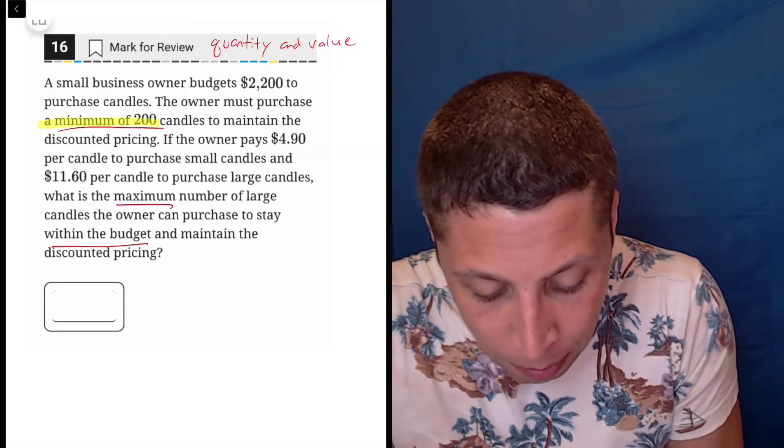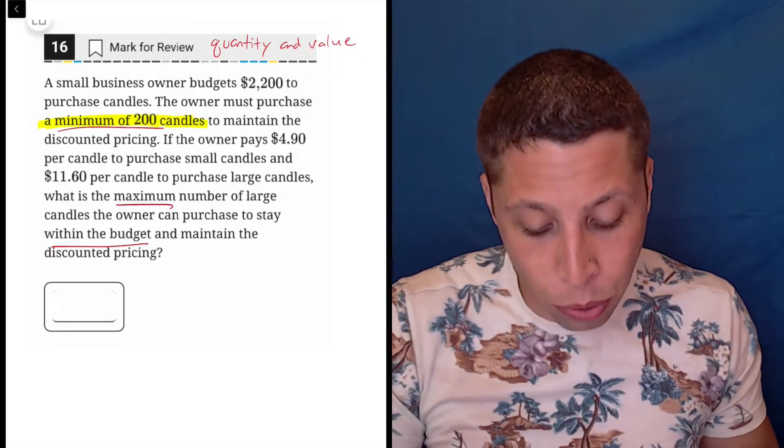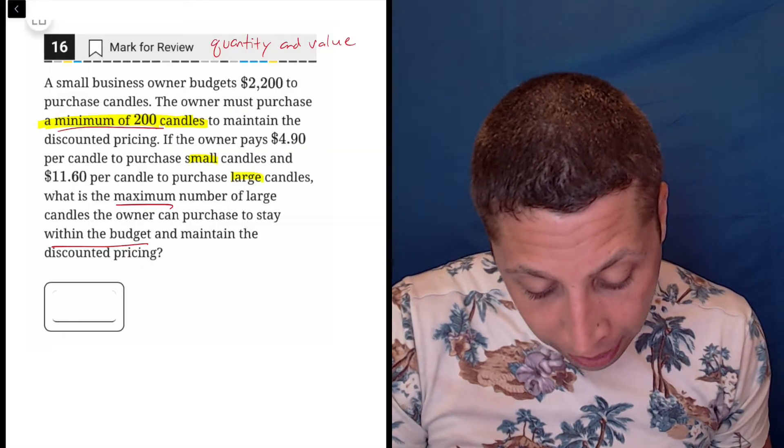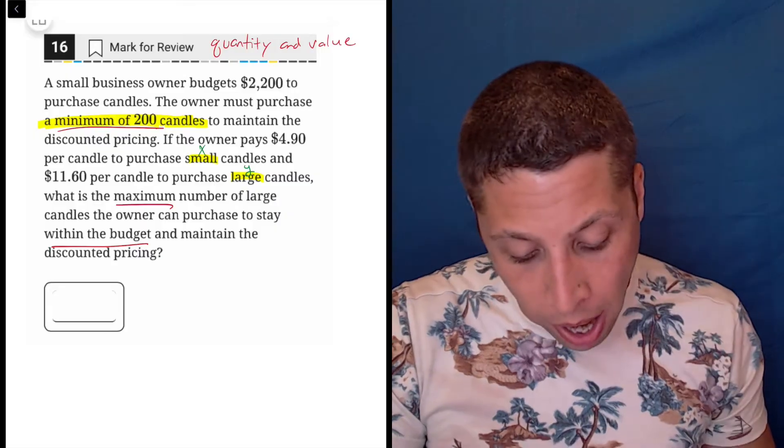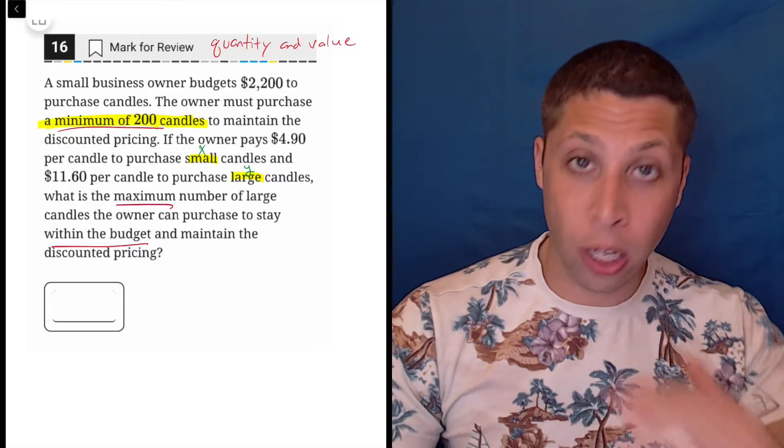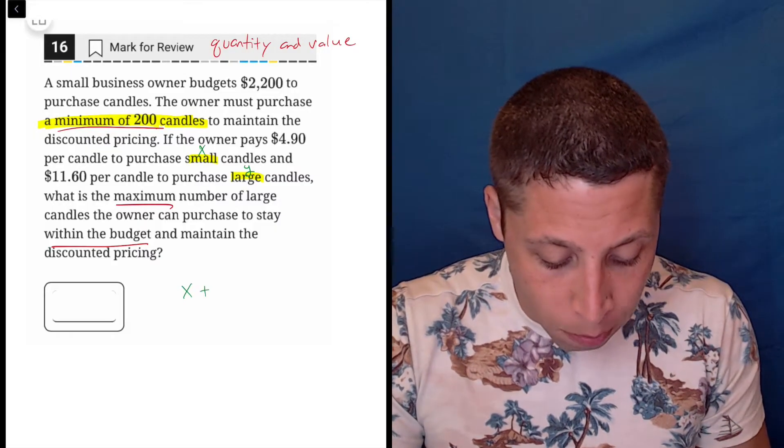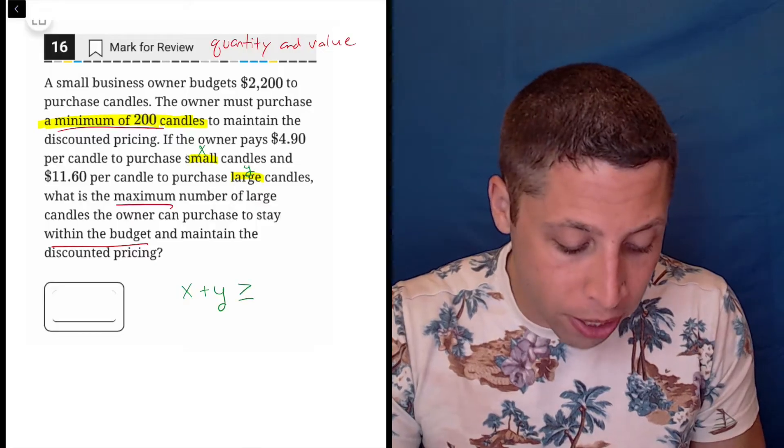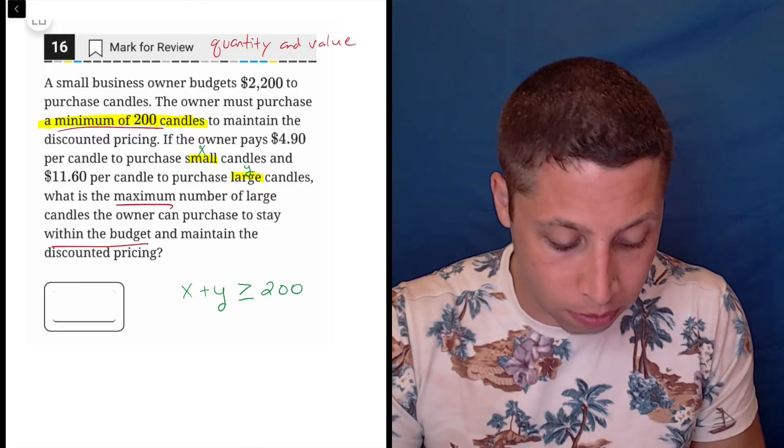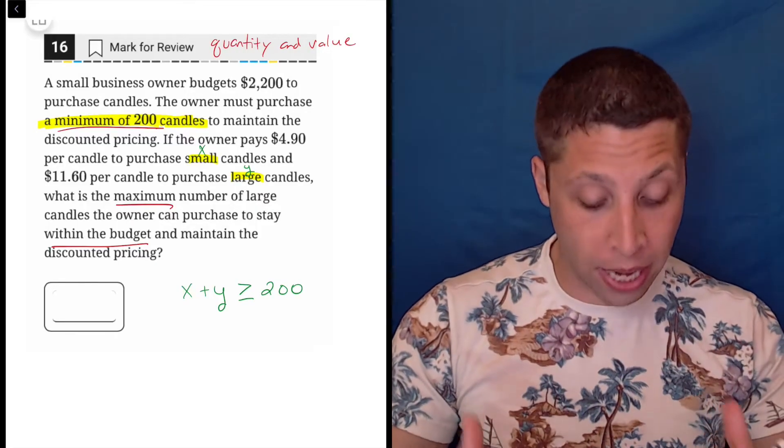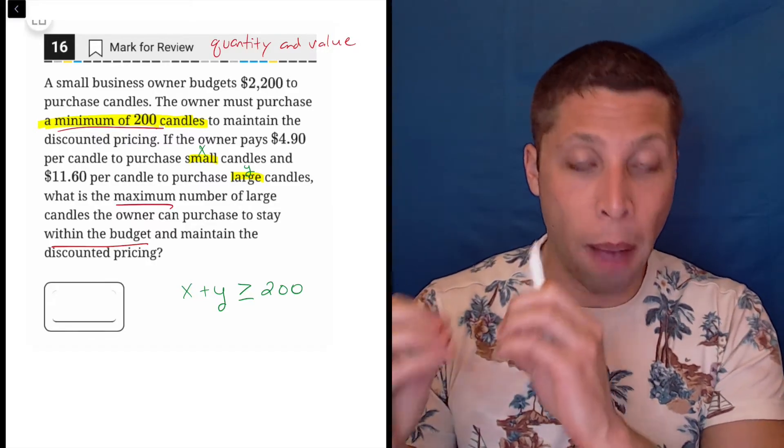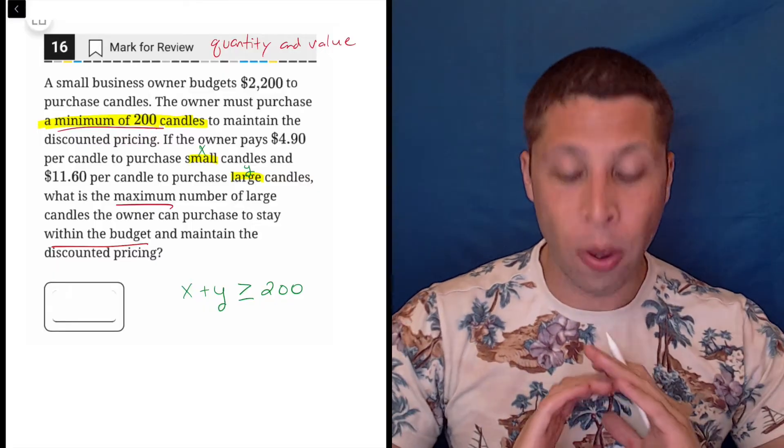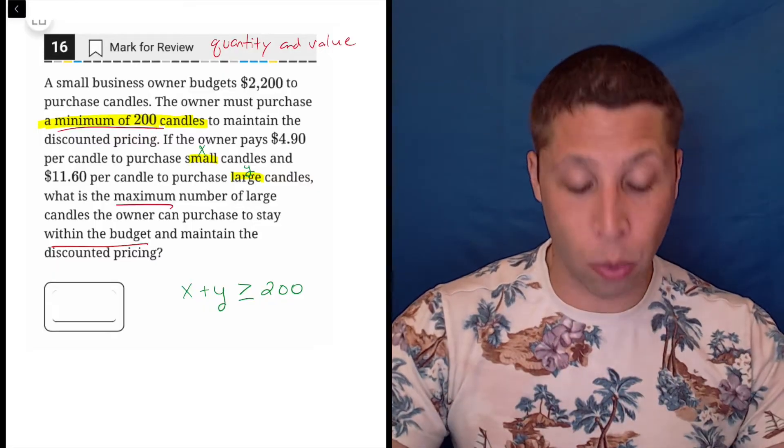So we can create a two variable inequality to represent the fact that we need a minimum of 200 candles. In fact, let's just highlight here. Minimum of 200 candles. And there are two types of candles, right? There's the small and the large. So we can say one is going to be X and one is going to be Y. And so the very simple inequality that we would make is that X plus Y has to be greater than or equal to 200. The minimum of 200 candles means we can go over. We can have more. But it has to always be composed of this combination of the small and the large. So this is just the first simple equation.